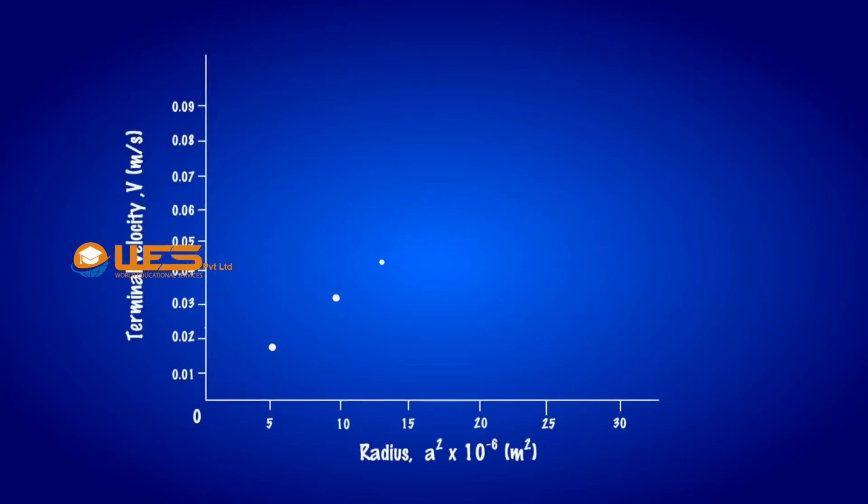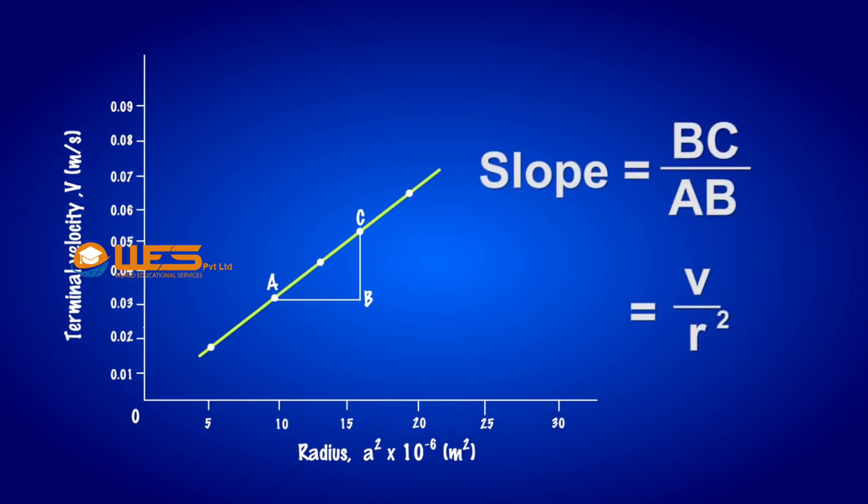We can plot a graph with the square of the radius of the ball along the x axis and terminal velocity along the y axis. The graph is a straight line. Its slope gives the value v/r².